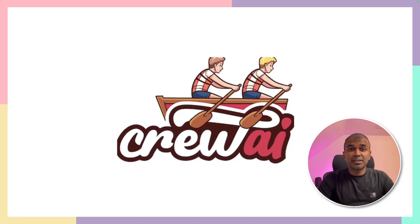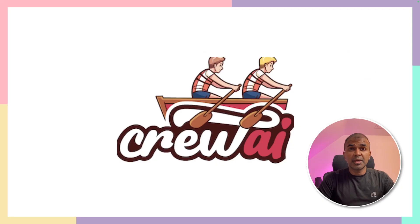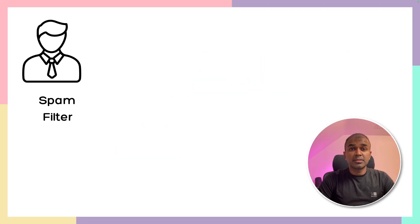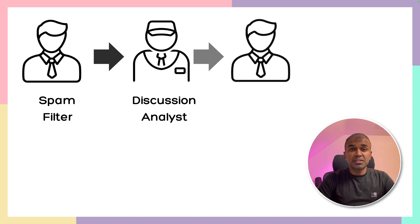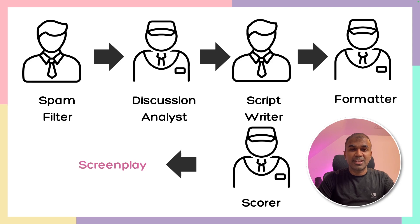This is amazing. We are able to convert an email thread or a conversation to a screenplay using AI agents. Using Crew AI, we are able to create a spam filter agent, discussion analyst, script writer, formatter, and final scorer to get the screenplay output. That's exactly what we're going to see today. Let's get started.